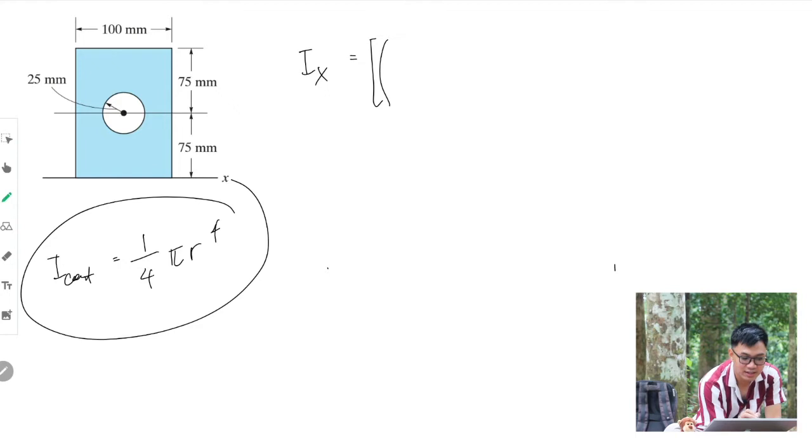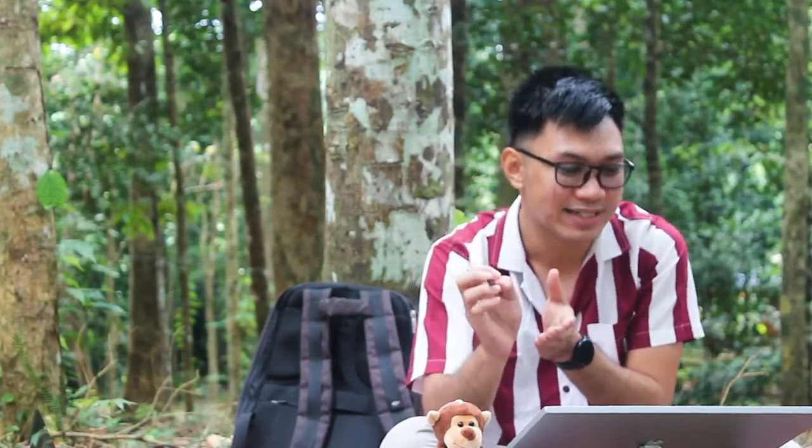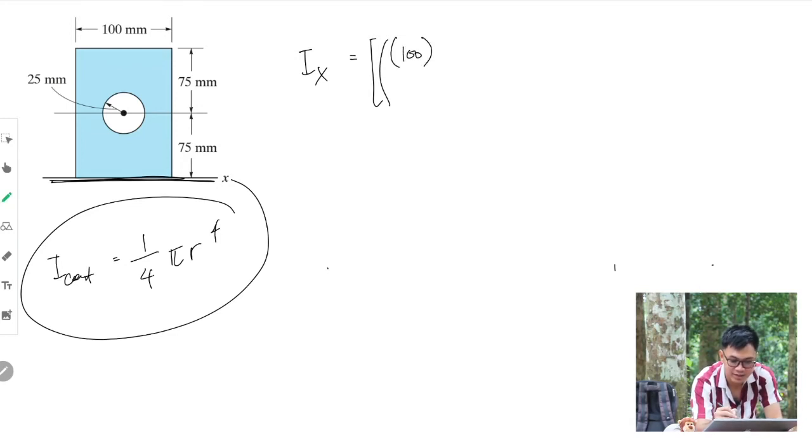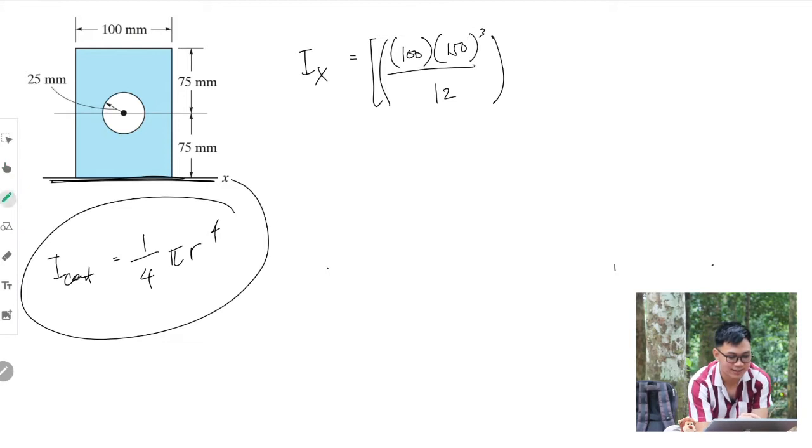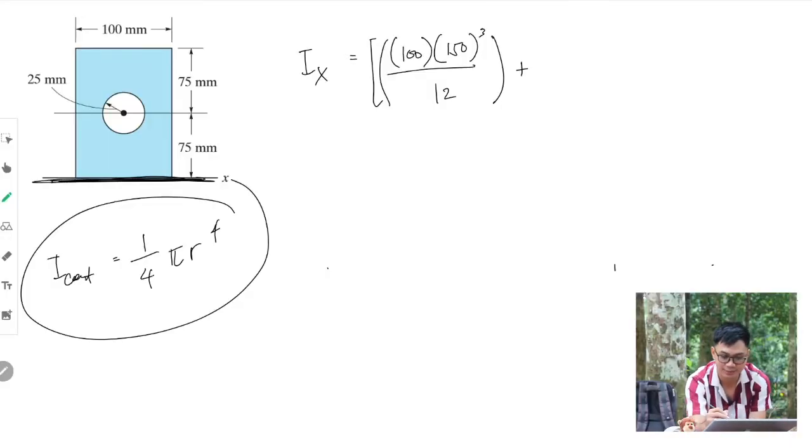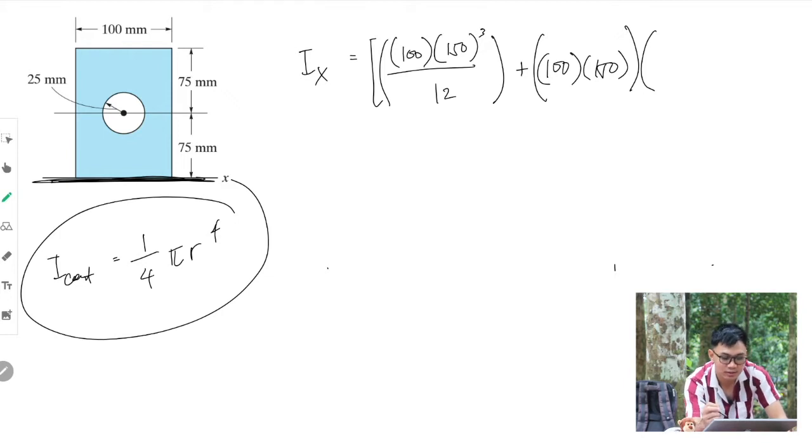The moment of inertia of the rectangle about the centroidal axis is bh cubed over 12, which is base 100 times height 150 cubed over 12. We add Ad sub y squared to get the moment of inertia about the bottom axis. The area is 100 times 150, and dy is the distance from the centroid to the base, 75 millimeters, so 75 squared.